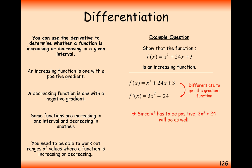How can we show this gradient is always going to be positive? The 3x² component is always going to be positive or equal to zero. When we add on 24, this is going to be positive as well. So given that this function is always greater than zero for all real values of x, the function is an increasing function.